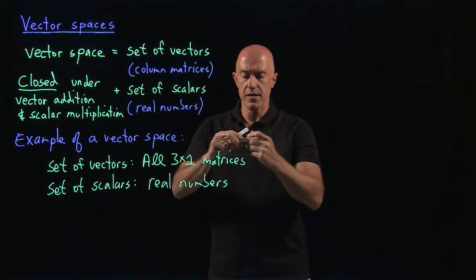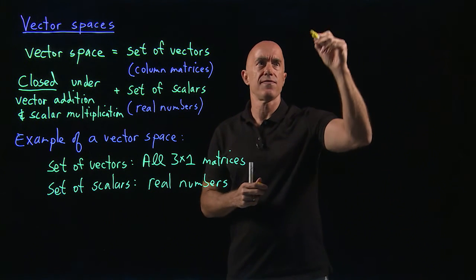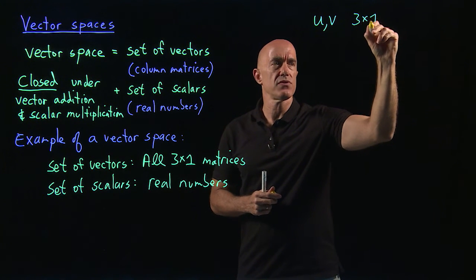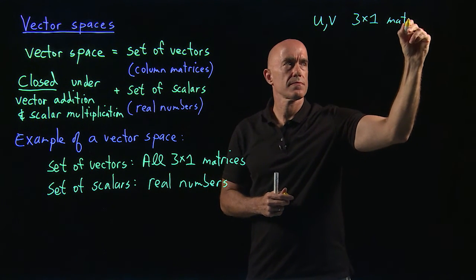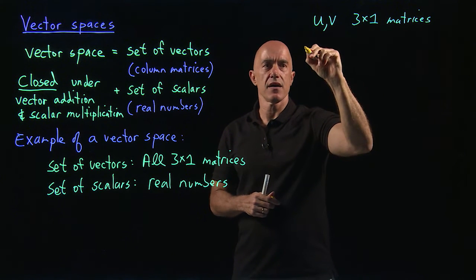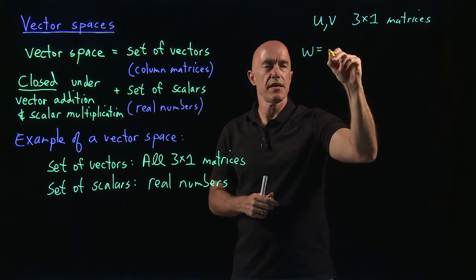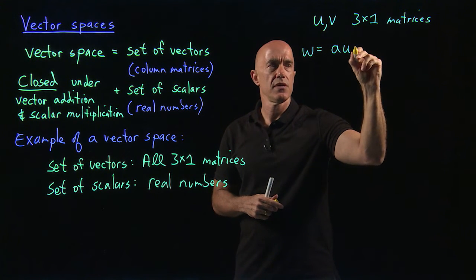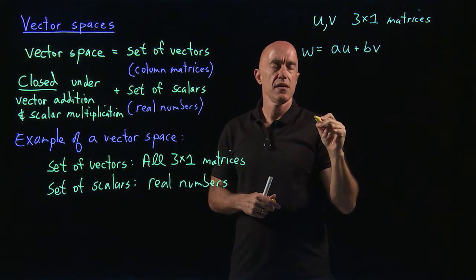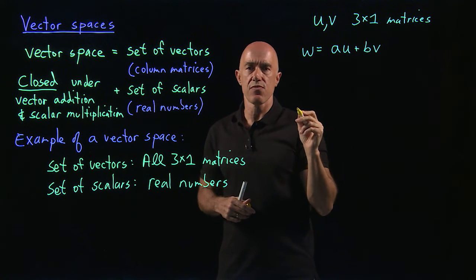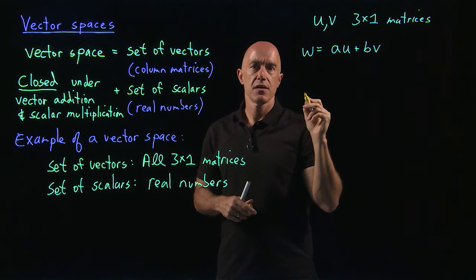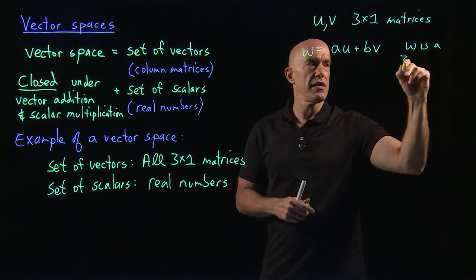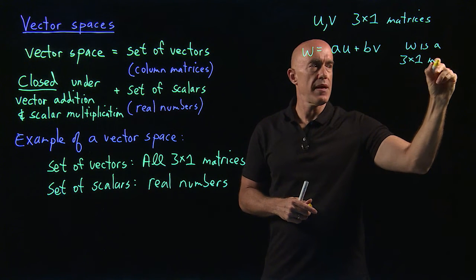We do. So if U and V are three-by-one matrices and we take W equal to a scalar — a real number — times U, plus a real number times V, then W is a three-by-one matrix.